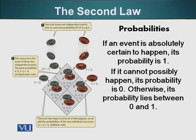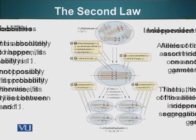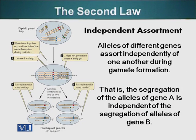I wanted to introduce the probability concept because you can use probability concepts to calculate genetic combinations. Now Mendel wanted to see what is the influence of transmission of one allele or one trait to the next generation on the other traits being transmitted. So basically, he started looking at two traits at the same time.